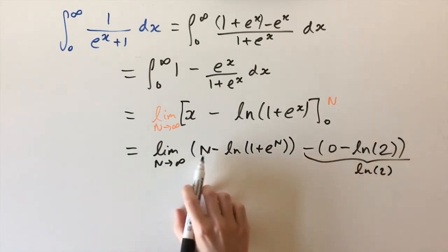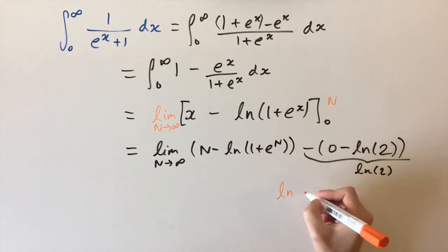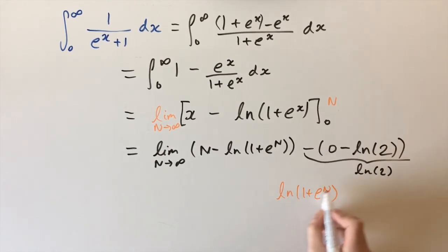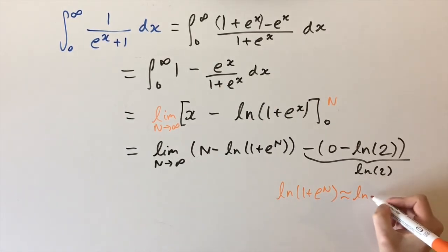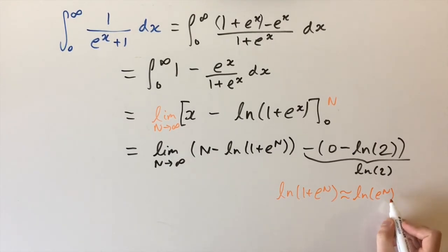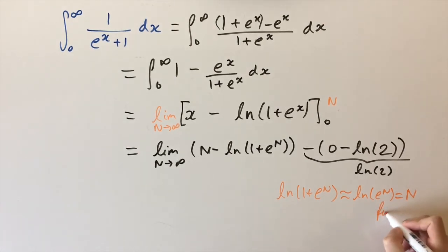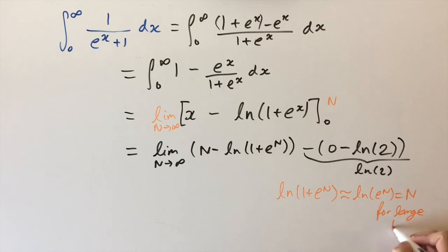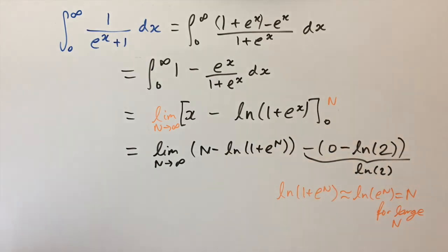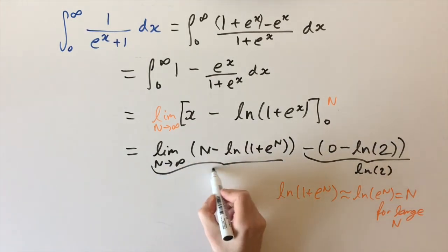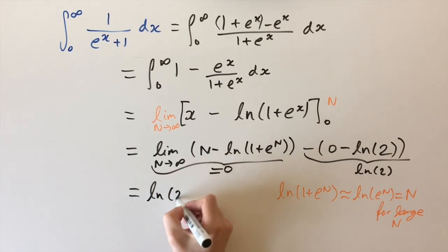Now what's left is to evaluate the limit, and I claim it goes to 0. We can approximate 1 plus e to the n: for large n, the 1 doesn't really contribute, so this is approximately the natural logarithm of e to the n, which by the power rule is approximately n. So our limit is approximately n minus n, which tends to 0. Therefore this whole limit is just 0.